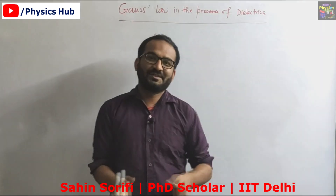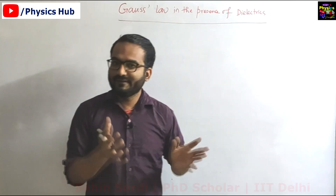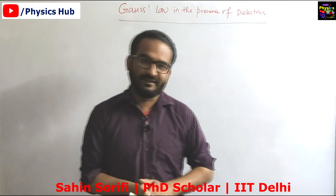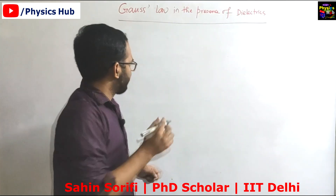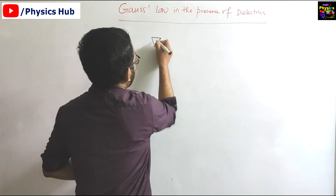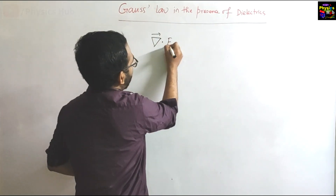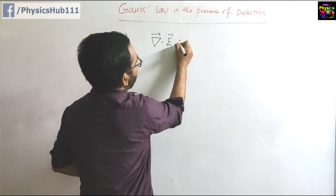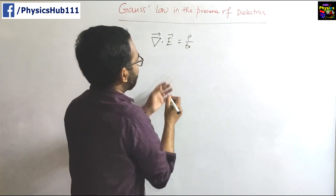Welcome to VisexHop. Today in this video we are going to talk about Gauss law in the presence of dielectrics. You know the conventional form of Gauss law — the differential form — is divergence of E equals rho upon epsilon naught.